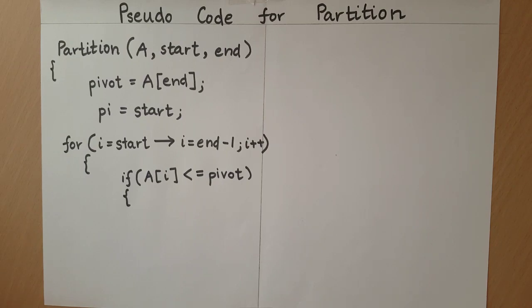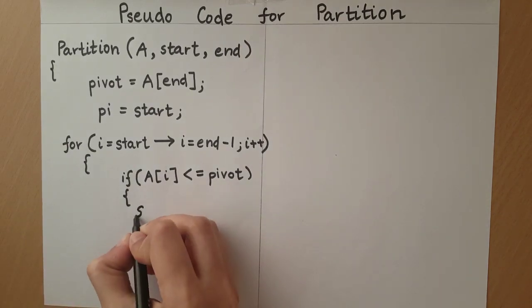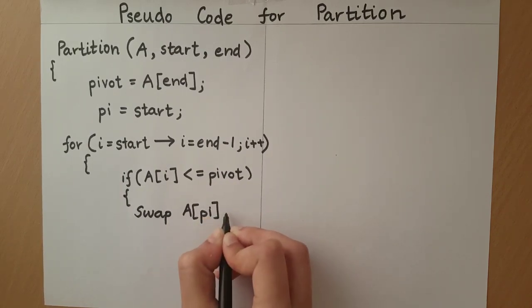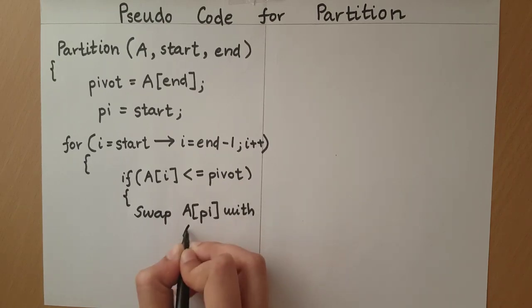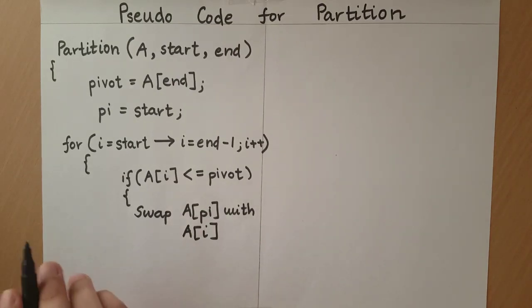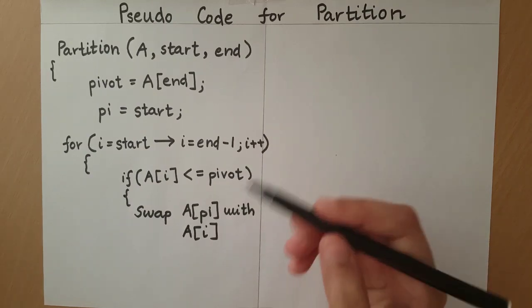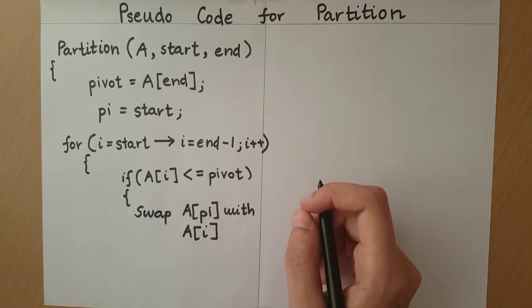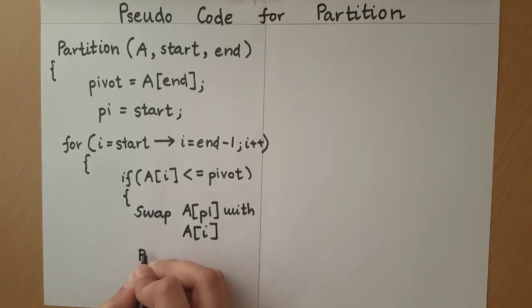The necessary changes made were to swap the element at pi and i. You can write the necessary code for this, but this is a pseudo code, so I am going to leave it at swap. After that, we have to increment pi by 1. And with this, our condition ends.